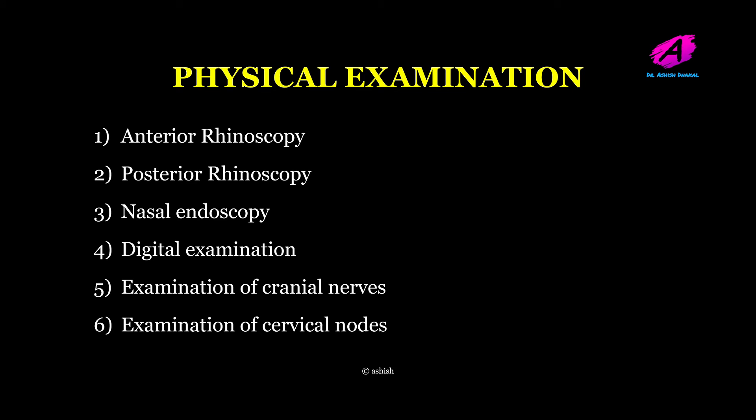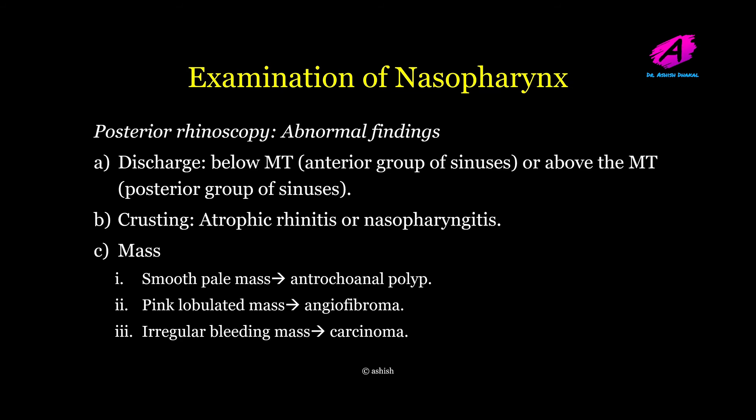Physical examination of the nasopharynx is done with anterior rhinoscopy, posterior rhinoscopy, nasal endoscopy, digital examination of the nasopharynx, and examination of the cranial nerves and cervical nodes. Posterior rhinoscopy is a common direct method. Abnormal findings on posterior rhinoscopy may include discharge below the middle turbinate in cases of anterior group sinuses, or above the middle turbinate in infection of the posterior group. Crusting may be present in atrophic rhinitis or nasopharyngitis.